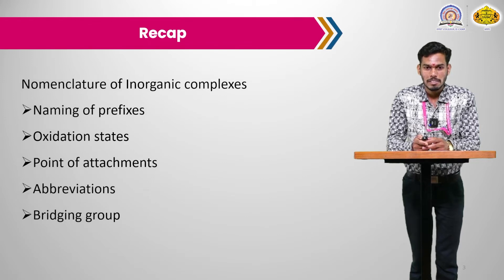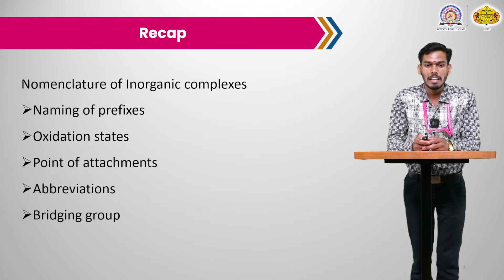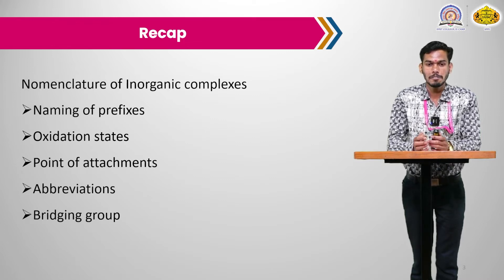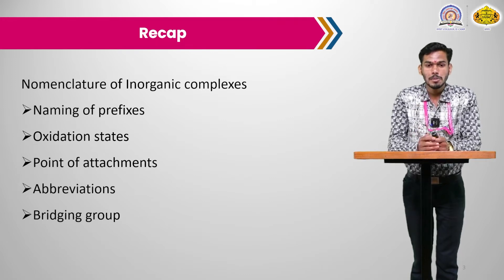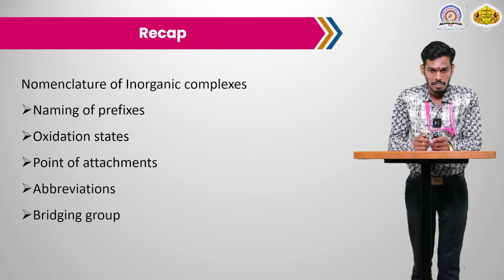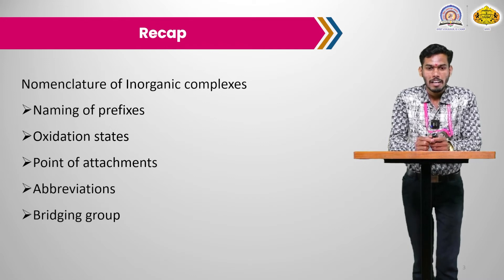In the previous lecture we discussed the nomenclature of inorganic complexes, in which we dealt with naming of prefixes, then oxidation state of the metal, then the point of attachment, then abbreviation, and the bridging group for the ligands. We discussed that the oxidation state of the central metal atom is either zero or in a plus state, written in Roman numerals in parentheses. If it is negative, the oxidation state is written with a minus sign followed by the Roman numeral.